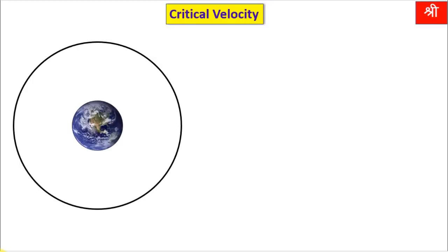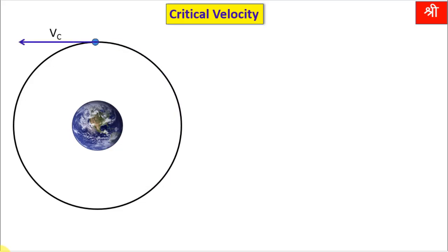What is critical velocity of a satellite? Artificial satellites are launched from the surface of Earth. For projection of a satellite, a two-stage rocket is used. The first stage of the rocket takes the satellite from Earth's surface to the desired height, and then the second stage changes the direction from vertical to horizontal and imparts it a certain velocity called critical velocity. Due to that critical velocity, the satellite revolves in a circular orbit.